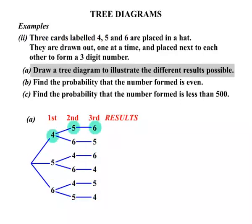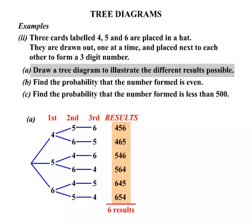The results now. We have a 4, 5, 6, so 456. Next one, 465. The next number is 546. Then 564. 645. And finally 654. Terrific. Those results is 1, 2, 3, 4, 5, 6 different results there.